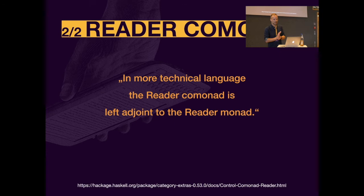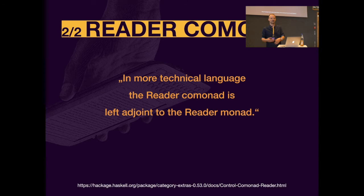That's step one. Step two: keeping it. Keeping it is the opposite of passing on, so we look at the categorically dual of the reader monad — the co-reader comonad, or co-reader. It turns out all we need to do is add the prefix 'co' and, as Haskell people say, flip the arrows. That's basically all. Or in more technical language: the reader co-monad is the left adjoint to the reader monad — there are lots of papers on adjunctions if you're interested.